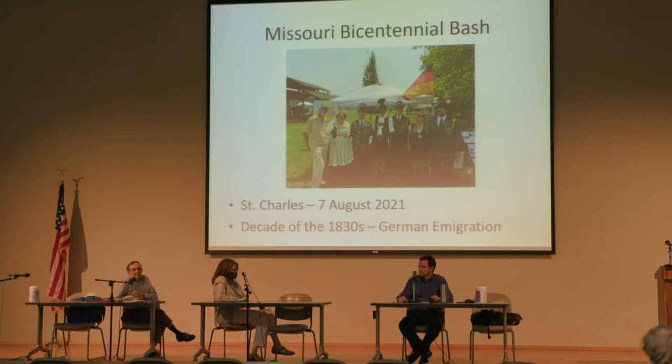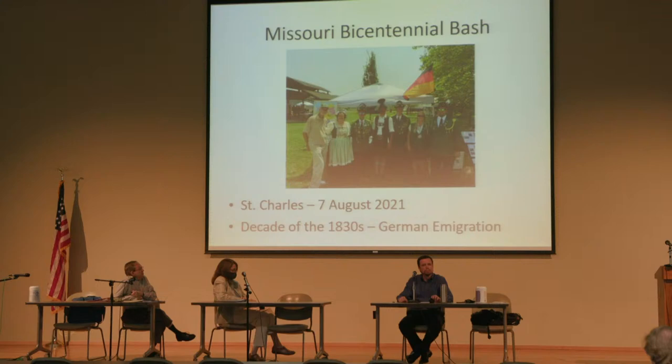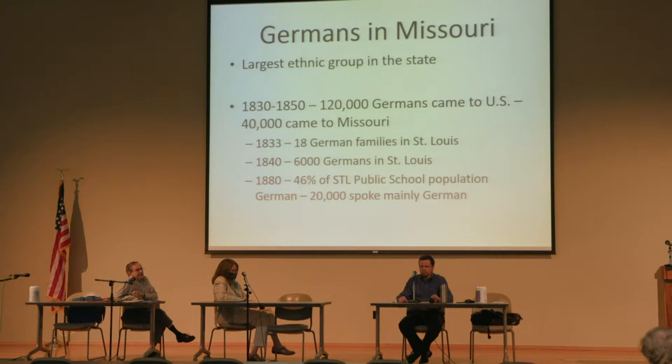This summer, in August — August 7th — the city of St. Charles sponsored a bicentennial event. They divided Frontier Park into decades and tried to get exhibitors and groups to talk about what happened during each time period. This is the German booth in the 1830s. So why Germans? Why 1830? Why immigration to Missouri? And why did the population of Germans suddenly swell?